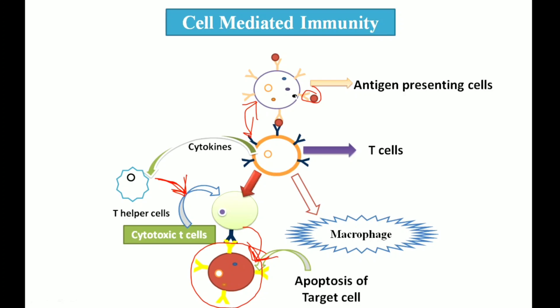Some T and B cells also differentiate into memory cells. These memory T cells act as a memory — whenever there is a secondary encounter with an antigen later in life, they come into action. They can recognize the pathogen and directly eliminate it.